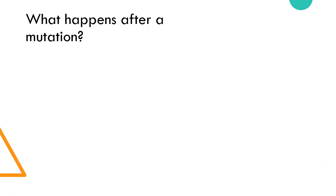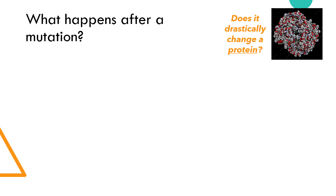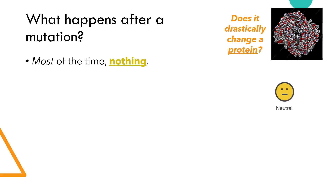So you may be wondering, when a mutation occurs in a living thing, what happens next? Are there big consequences? Does it cause that living thing to die or get sick or experience a drastic change? There are a few possibilities, but it's important to note that it all depends on whether or not the mutation drastically changes the code for making a protein. You may be surprised to hear that most of the time, nothing happens — most of the time, a mutation won't have any effect at all.